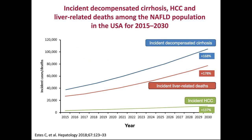This is the Estes et al. study published in Hepatology, looking at the frequency of incident decompensated cirrhosis, liver cancer, and liver-related deaths among patients with fatty liver disease in the United States, projected from 2015 to 2030. In 2019 we're about a third of the way into this projection. The frequency of incident decompensated cirrhosis is projected to increase by 168%, incident liver-related deaths by 178%, and incident hepatocellular carcinoma by 137%. Almost every other cause of death in the United States is declining over time.